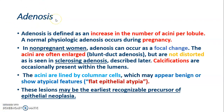The third component of fibrocystic disease is adenosis, defined as an increase in the number of acini per lobule. It is a normal physiologic process during pregnancy, while in non-pregnant women, adenosis can occur as a focal change. The acini are often enlarged but not distorted, as seen in sclerosing adenosis. Calcification may be present within the lumens. The enlarged acini are lined by columnar cells, which may appear benign or show atypical features, known as flat epithelial atypia.